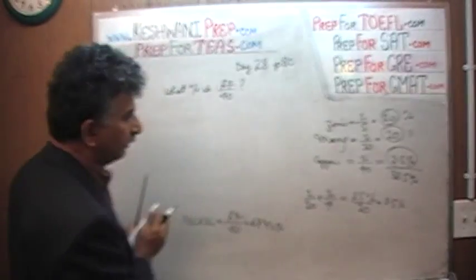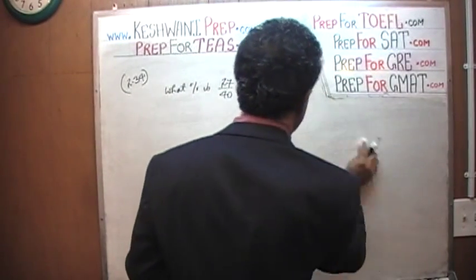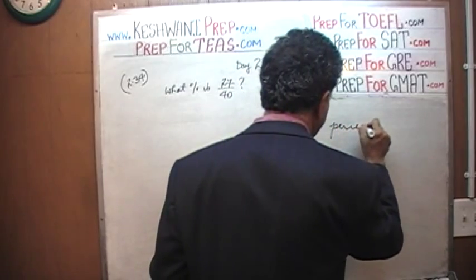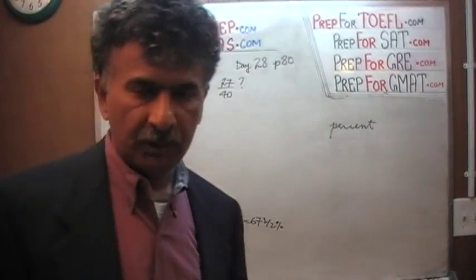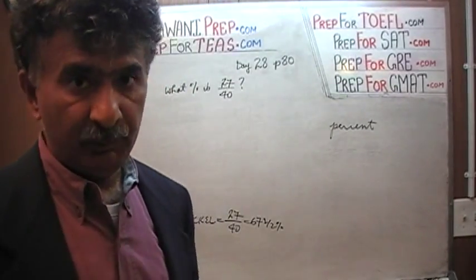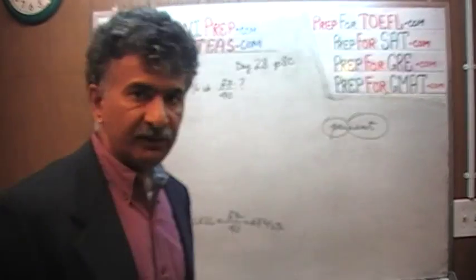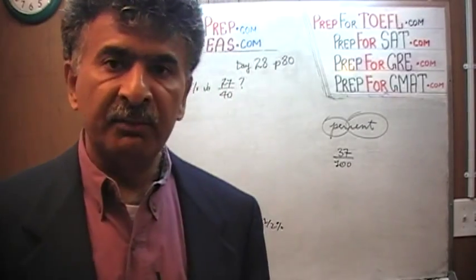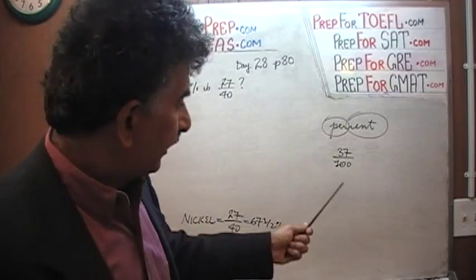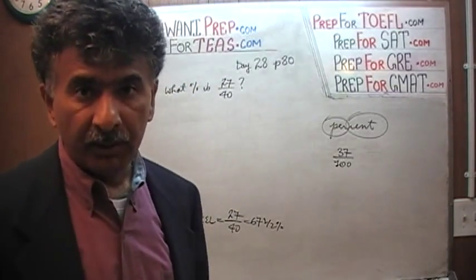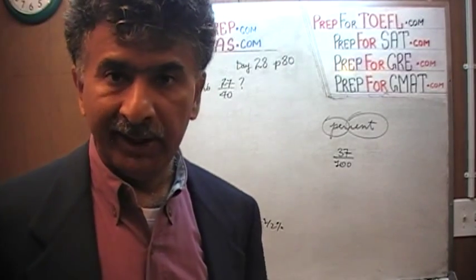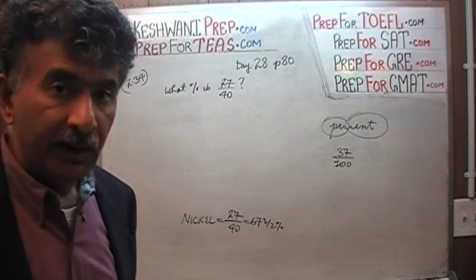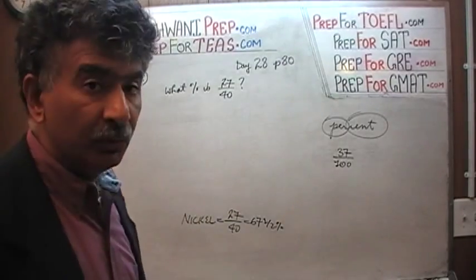The key to understanding this question is realizing that the word 'percent' means per 100 — out of 100. So if you have 37 over 100, that is just 37 percent, because that is what percent means. 48 over 100 is 48 percent; 12 out of 100 is 12 percent; 8.5 out of 100 is 8.5 percent. In other words, if we can somehow convert the denominator into 100, we will be home free.